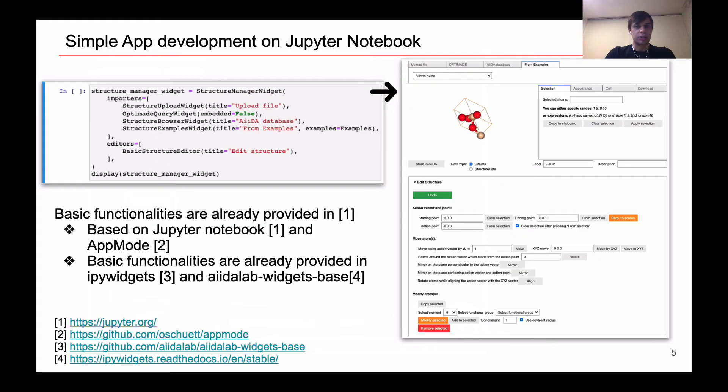Before actually showing the real applications, I would like to emphasize also the fact that AiiDAlab does not only provide an easy way to run simulations, but the applications that you will see further in the slides are relatively easy to build. Thanks to the integration with Jupyter Notebook and app mode, the Python source code that one typically puts into Jupyter Notebook can be hidden, leaving us only with the output, which acts as a front-end.